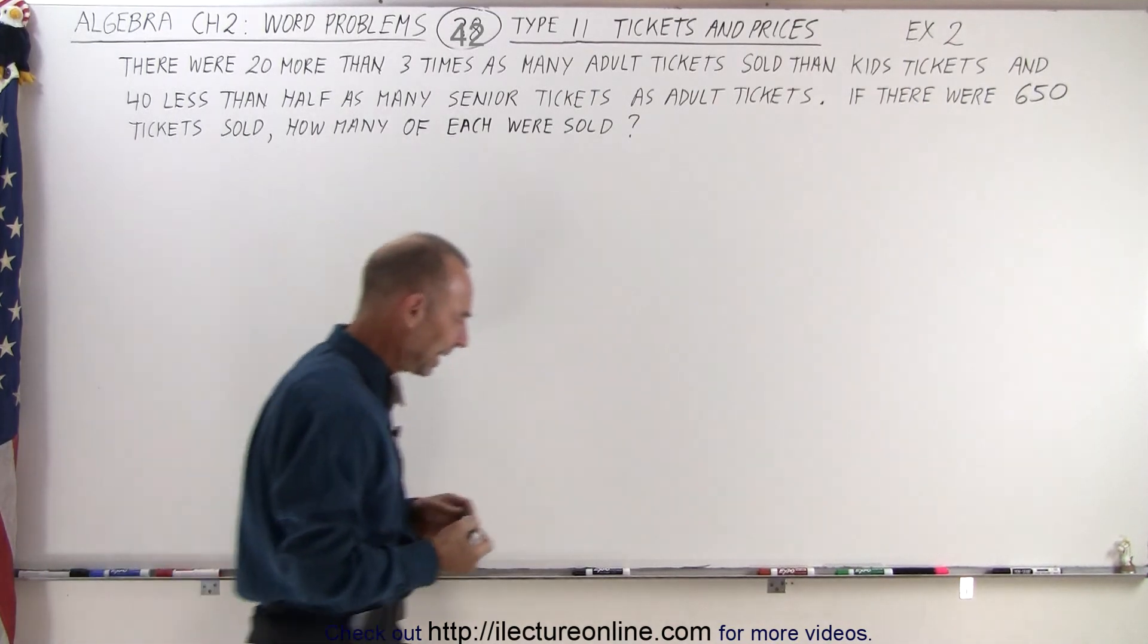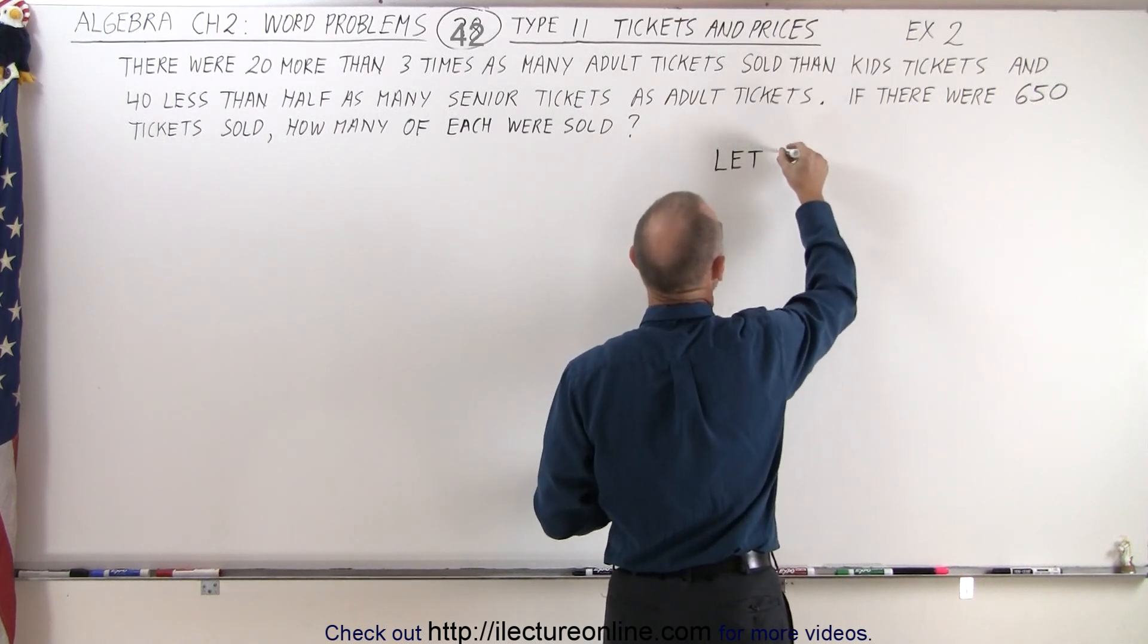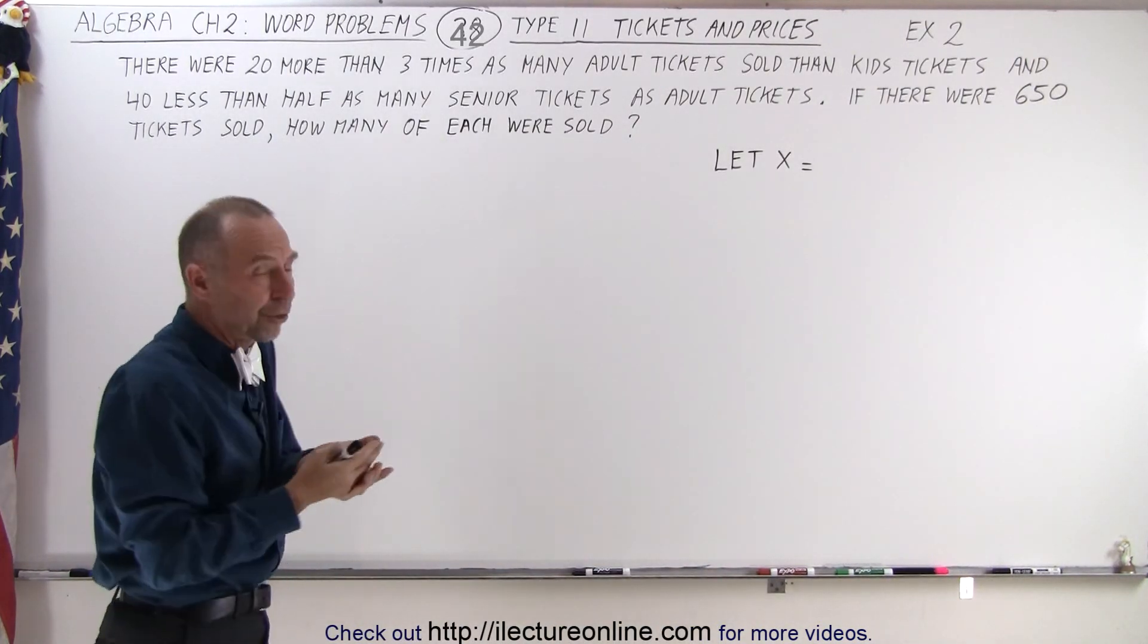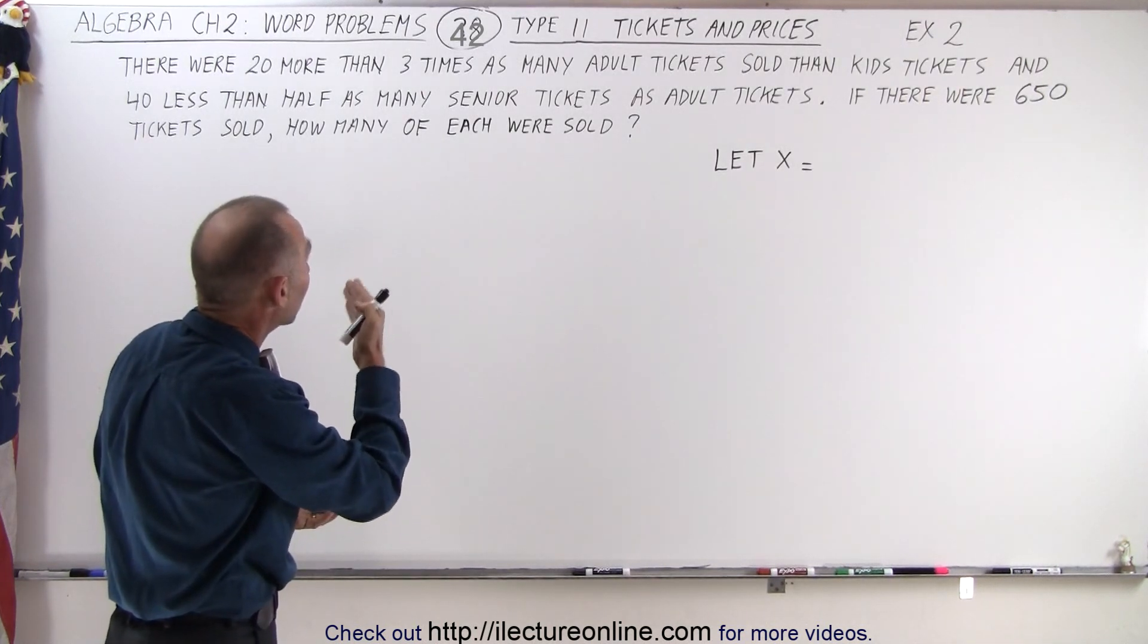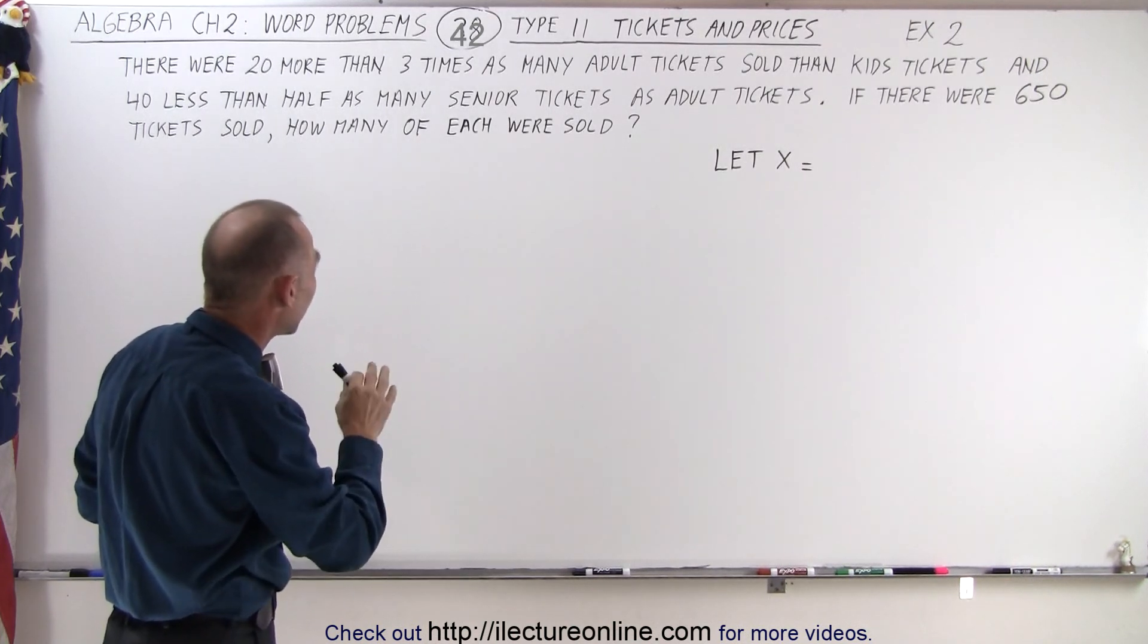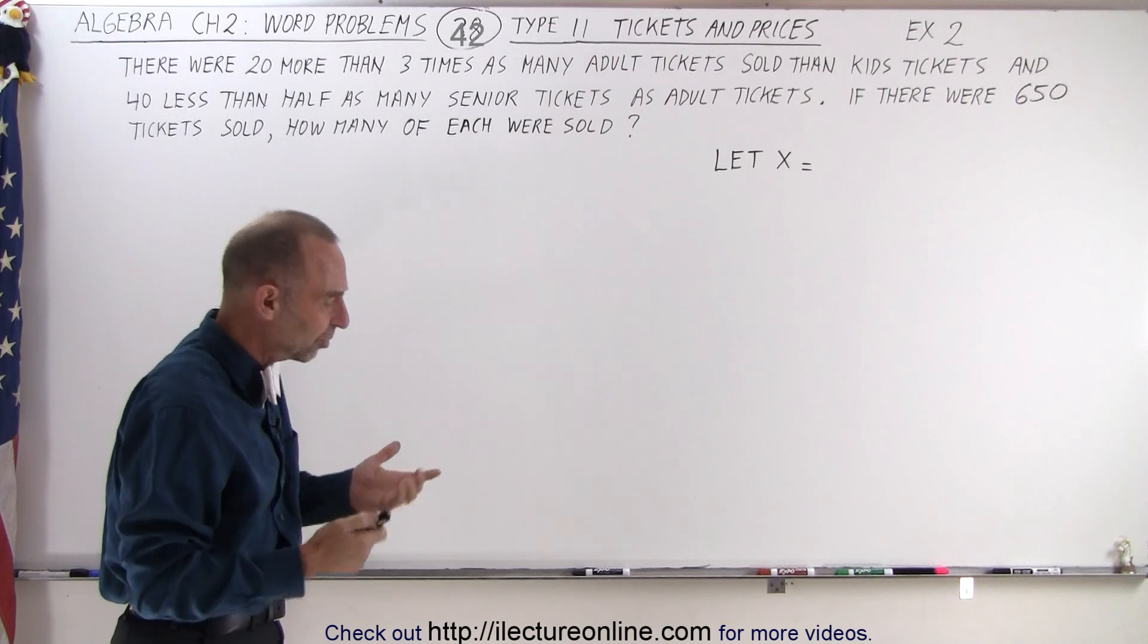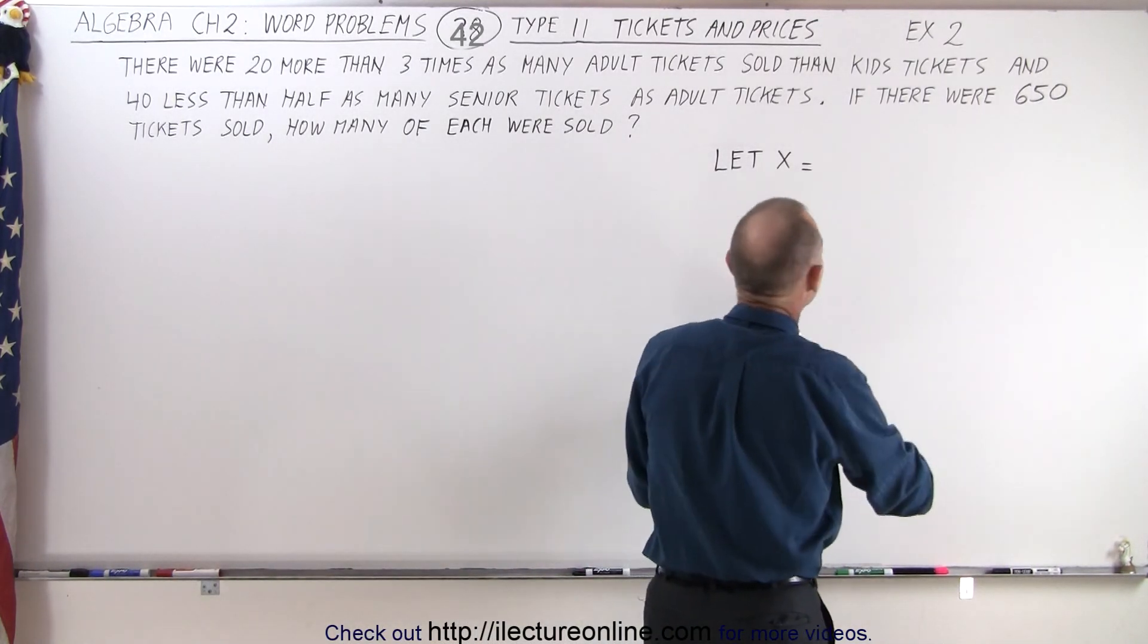So we're going to let x equal something, and it will be the number of tickets for one of the three categories: either adult tickets, kids tickets, or senior tickets. We prefer to let it be the smallest number of tickets, and it's clear that there's more adult tickets than kids tickets. Because of the relationship between seniors and adults, it looks like the number of kids tickets is probably the smallest number. Now if we guess wrong, it's not really a big deal, but it just makes it a little bit easier. So we're going to let x equal the number of kids tickets.